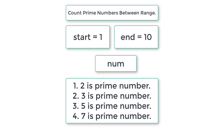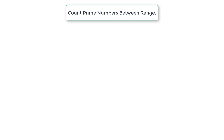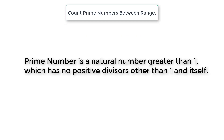Make sure to know the definition properly. A prime number is a natural number greater than 1 which has no positive divisors other than 1 and itself. It should be perfectly divisible by 1 and itself — no other number should perfectly divide it. If that holds, it's a prime number; if not, it's not a prime number.